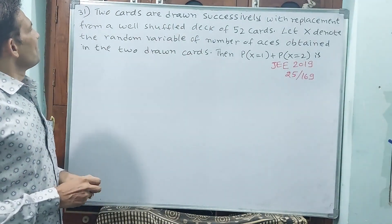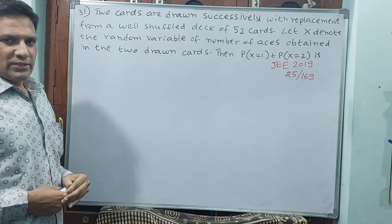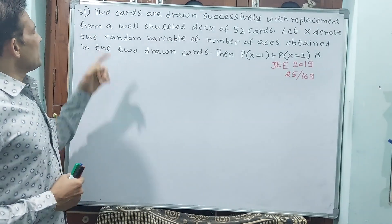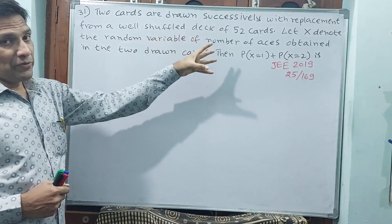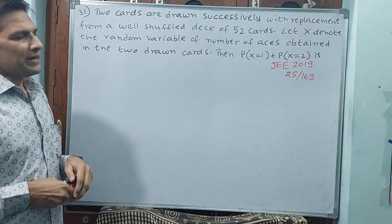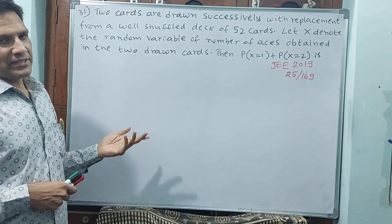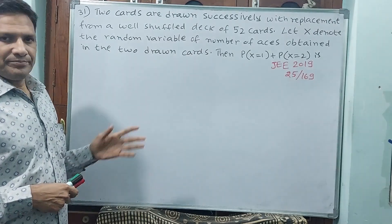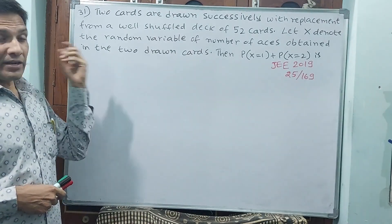Question number 31. Two cards are drawn successively with replacement from a well-shuffled deck of 52 cards. Normal playing cards, 52 will be there, 13 into 4, 4 sets and all, you know, are already specified.